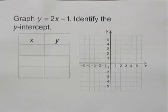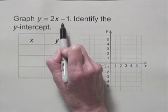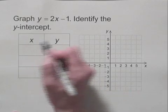Graph y equals 2x minus 1. Identify the y-intercept. Well, this equation is written in the form y equals mx plus b. b is the second coordinate of the y-intercept. So we know that the y-intercept is 0, negative 1.